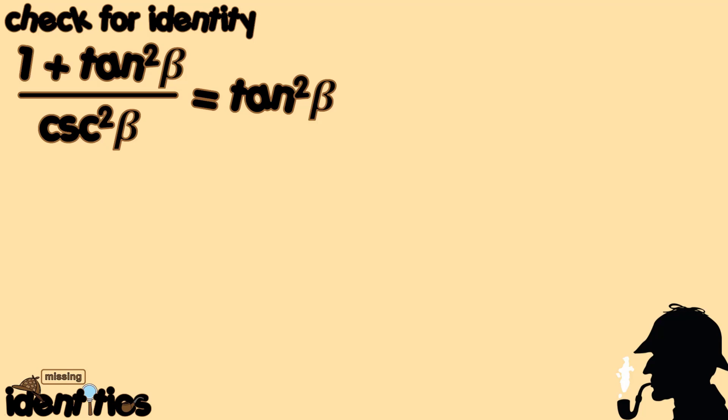The first Pythagorean identity is given as the square of sine of any angle — let's use beta since that's the angle here — plus the square of cosine beta is equal to 1. It could also be commuted: cosine squared beta plus sine squared beta. As long as it's addition, it equals 1. This is derived from our unit circle.